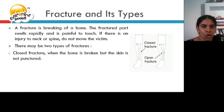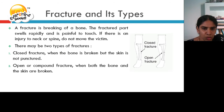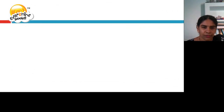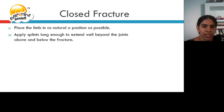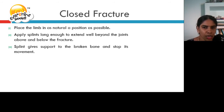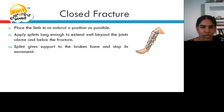A closed fracture is when the bone is broken but the skin is not punctured. Closed fracture is also known as compound fracture. Apply splints long enough to extend well beyond the joints above and below the fracture. Splints give support to the broken bone and stop its movement. The picture shows the splint giving support to the broken bone so that movement cannot take place in the joints.